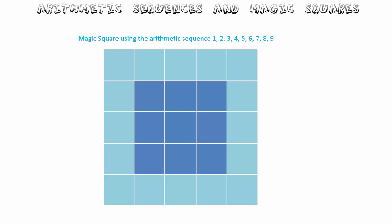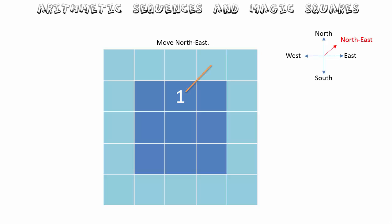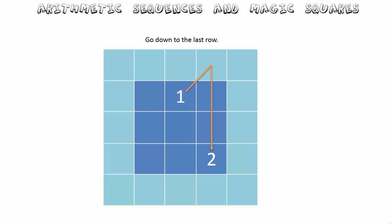Let's begin with a three by three magic square using the numbers one to nine. We always begin by placing the first number, one, in the middle of the first row. The pattern we follow is always to move in the northeast direction. If you continue that line until you reach outside the square, you then go all the way down to the bottom row — that's where the number two is placed.